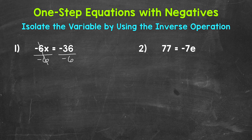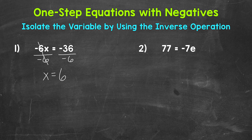The negative 6s equal a positive 1 because negative 6 divided by negative 6 — a negative divided by a negative equals a positive. This gives us 1x, which is just x, so x is now isolated. x equals, and on the right side of the equation, negative 36 divided by negative 6 equals a positive 6, because a negative divided by a negative equals a positive. So our solution is x equals 6.